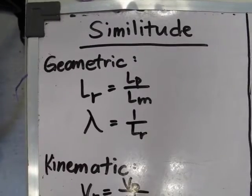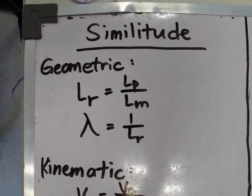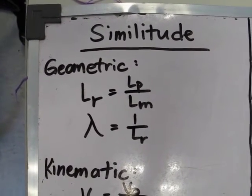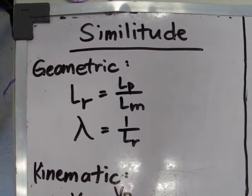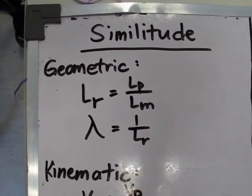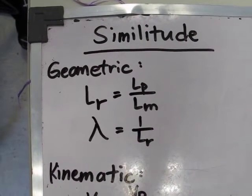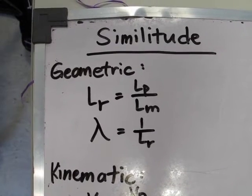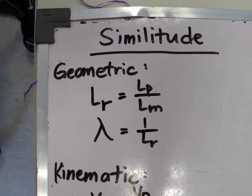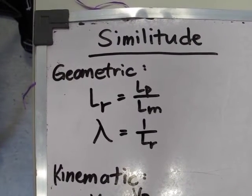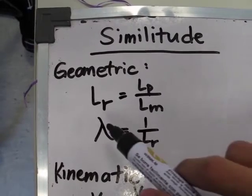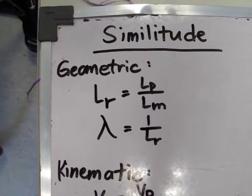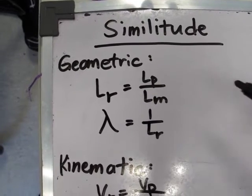Similitude consists of various topics under it, one of which is geometric similitude. In this type of similitude or relationship, the model and the prototype should be identical in shape but differ in size. LR, or the scale ratio, is the ratio of the linear dimensions of the prototype with respect to the model.